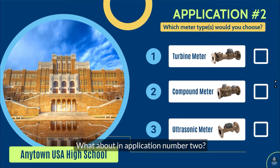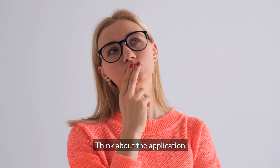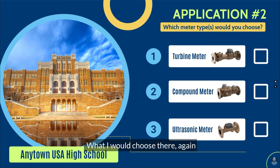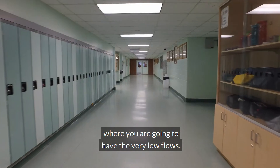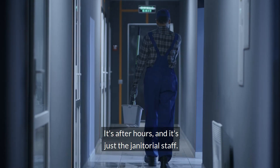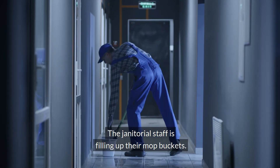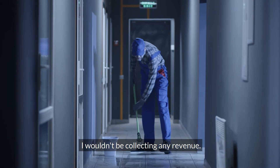What about application number two — Anytime USA High School? What would you use there: a turbine, compound, or ultrasonic? What I would choose again is a compound or an ultrasonic, because there are going to be times where you have very low flows. When the kids are not there, it's after hours and it's just the janitorial staff filling up their mop bucket. If I have a turbine meter in there, I wouldn't be collecting any revenue.